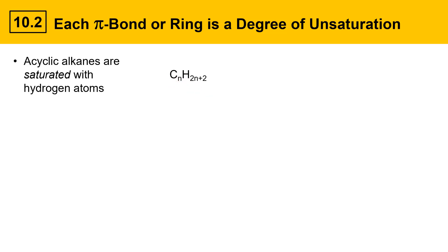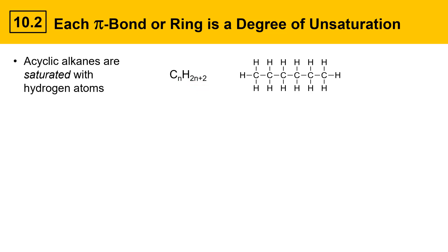As an example, let's take a look at hexane. Here's the structure of hexane. It has 6 carbons, therefore has 6 times 2, which is 12, plus 2 equals 14 hydrogens. This molecule is saturated with hydrogens because you couldn't fit any more hydrogens on here without breaking carbon-carbon bonds to make new carbon-hydrogen bonds. It has a formula C6H14.